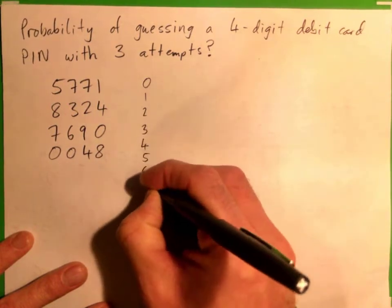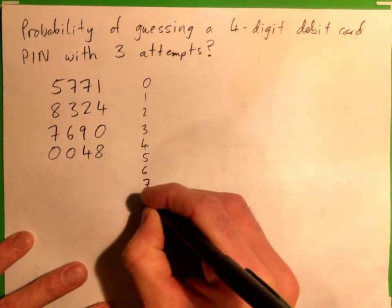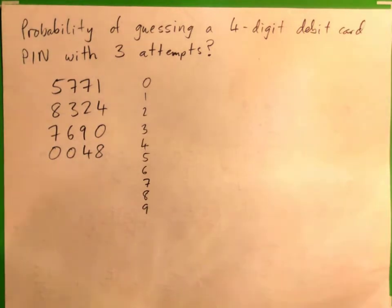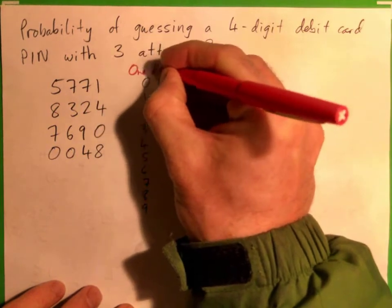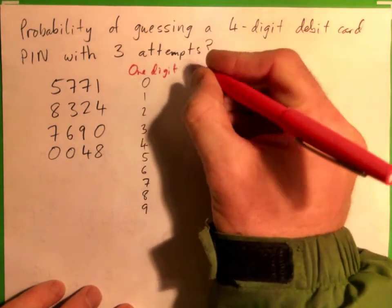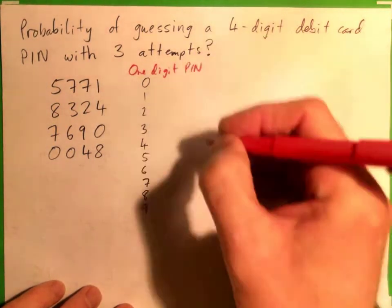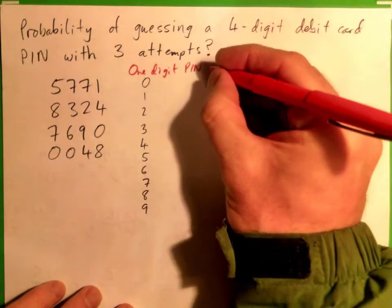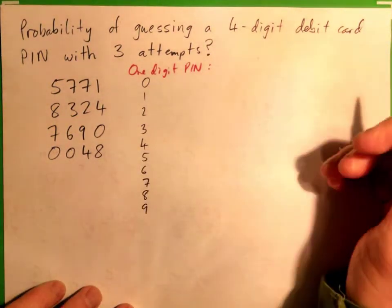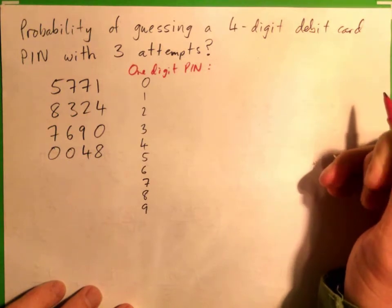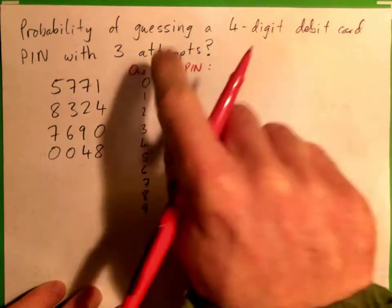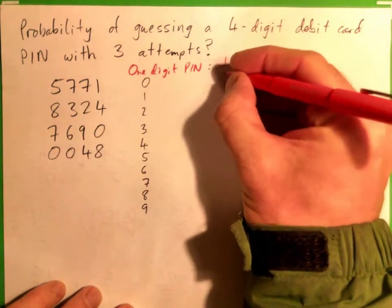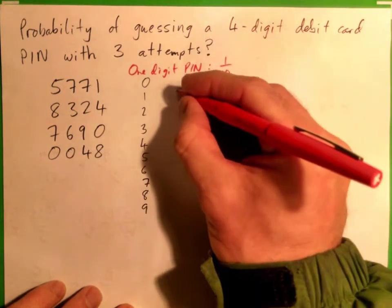Let's start out with a simpler case. If I had a one-digit PIN, what's the probability of guessing it? One out of ten — you have zero through nine as options. So if you were to guess a one-digit PIN, the probability is one out of ten.